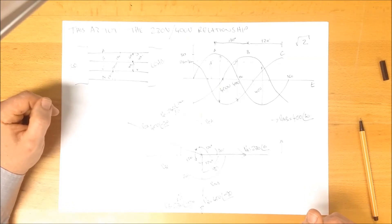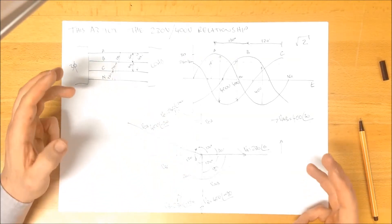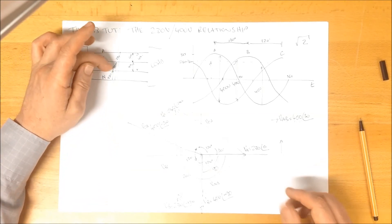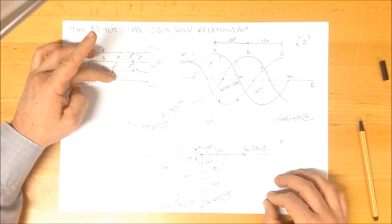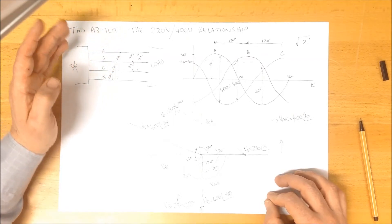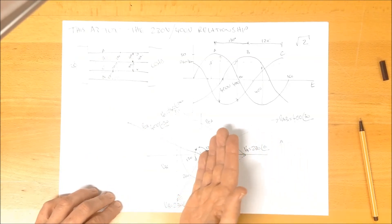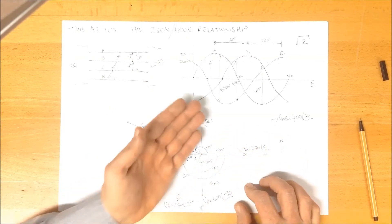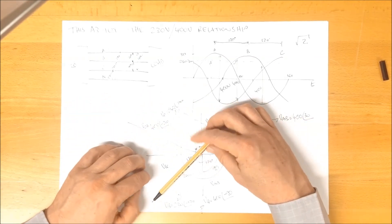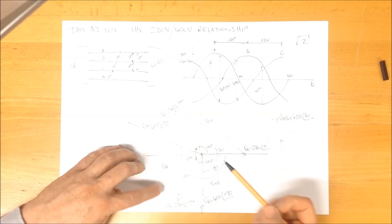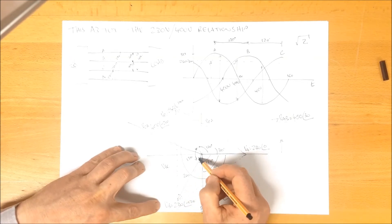One final comment. This relationship does work out to be root 3, and that applies in this perfectly balanced situation. If any of these input voltages here were not 230, but were rather 235, or they had a slight tweak on the angle, maybe it wasn't by minus 120, it was minus 115, or minus 125, then that will change the magnitude of VAB. For example,